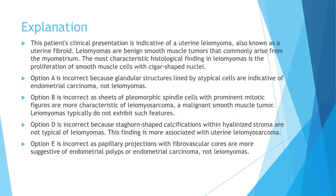This patient's clinical presentation is indicative of a uterine leiomyoma, also known as a uterine fibroid. Leiomyomas are benign smooth muscle tumors that commonly arise from the myometrium. The most characteristic histological finding is proliferation of smooth muscle cells with cigar-shaped nuclei. Option A is incorrect as glandular structures lined by atypical cells indicate endometrial carcinoma. Option B is incorrect as pleomorphic spindle cells with prominent mitotic figures are more characteristic of leiomyosarcoma. Option D (staghorn calcifications with hyalinized stroma) and Option E (papillary projections with fibrovascular cores) are associated with leiomyosarcoma and endometrial polyps or carcinoma respectively.